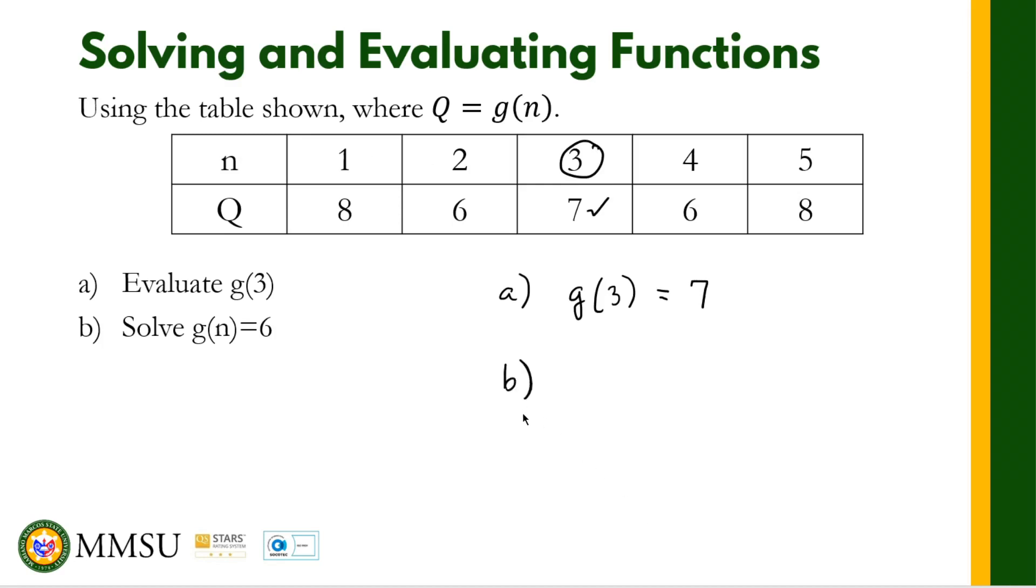For letter B, G of N is equal to 6. We are solving for the input value N. When we are given G of N is equal to 6, N is equal to - let us take a look at the output values. We are looking for 6. This is 6. There is another 6 in there. That means we have 2 solutions for this problem. So N is equal to 2 or N is equal to 4. So that's how we solve or evaluate functions if we are given a table.